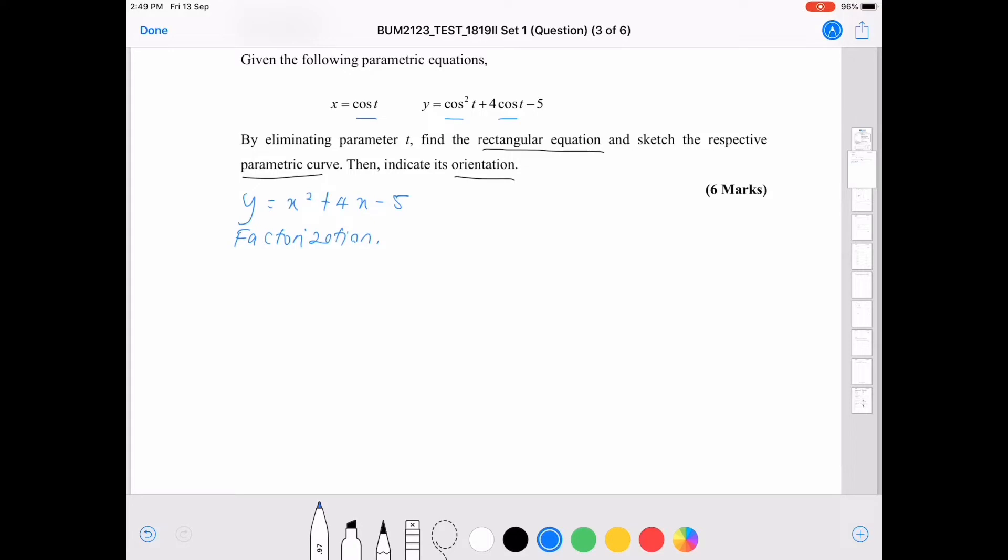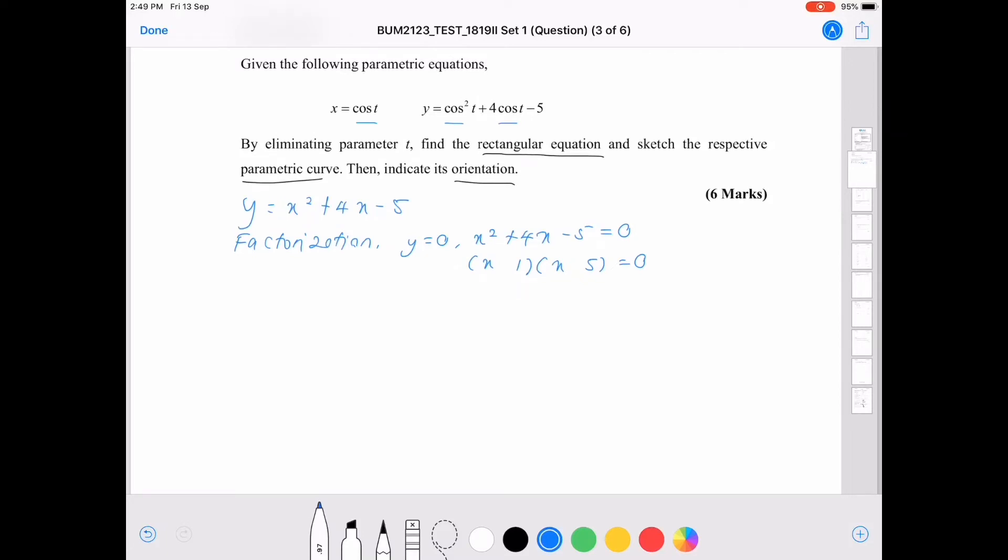Okay, let's say we want to find the x-intercept. So, let y equals to 0. So, obviously, we will have x squared plus 4x minus 5 equals to 0. Obviously, we can factorize this one, become x equals to 0. Okay, how to do it? Minus 5, meaning the combination may be 1 and 5. And then, we have plus 4 there. So, suppose here is 5 and this is minus. So, when we simplify this one, obviously, x equals to 1 and x equals to minus 5. So, this is the x-intercept when y equals to 0.